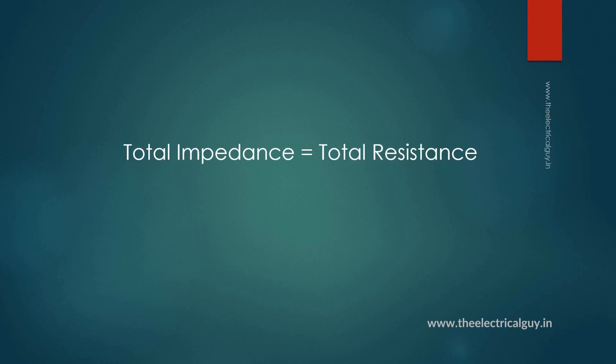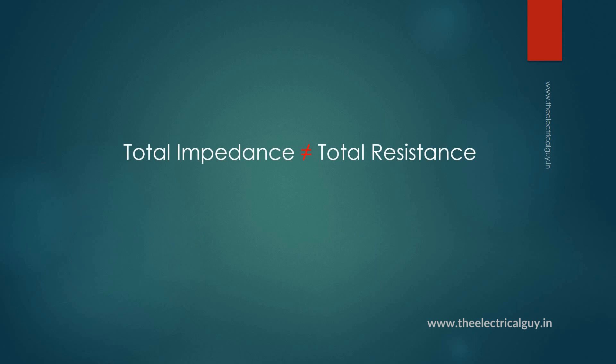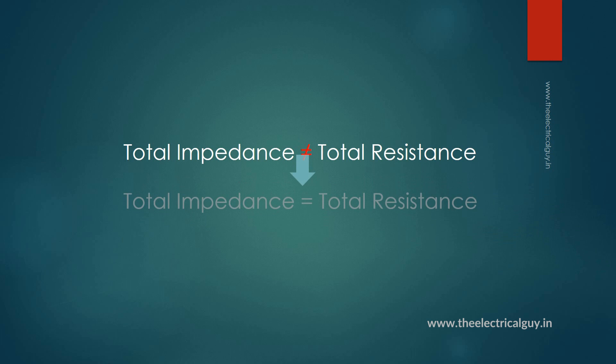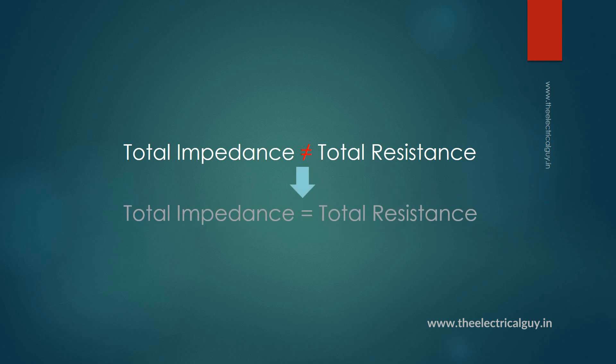If you understood this simple math, you have understood the concept of how you can improve power factor. If your system's total impedance is equal to total resistance, then it means your power factor is good and no reactive power is consumed. But as soon as you add load to it — the load most of the time is inductive — your total impedance is no longer equal to your total resistance, which means you are consuming reactive power and the power factor is poor. To get back to your original position where total resistance equals total impedance, you have to add an equal and opposite amount of reactive power to the system.